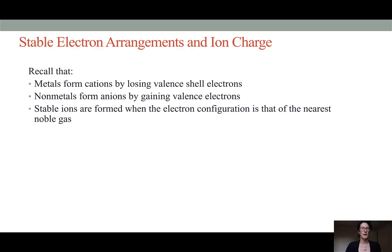To understand what's happening here, we need to remember that metals form cations, and they do this by losing their valence shell electrons. Non-metals form anions through gaining valence electrons. The only ions that will be stable, whether they be cations or anions, are those that are formed when the electron configuration is that of a nearest noble gas, meaning it has a complete octet.